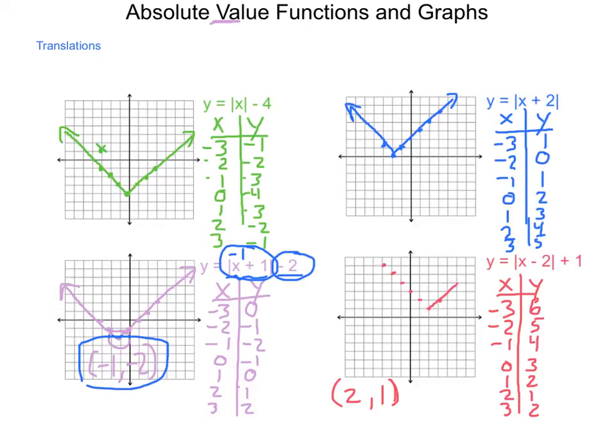The graph goes to the left and then to the right, and sure enough, our vertex is located exactly where we predicted. So this is a faster way of being able to graph. Next, aside from translations, what other types of transformations do we have? That is stretch.